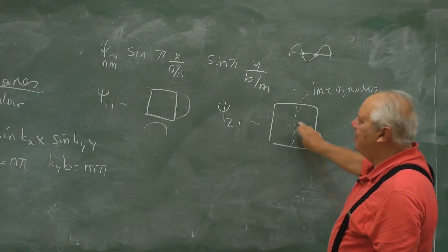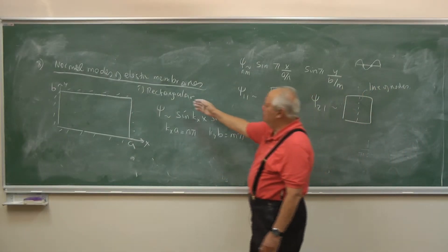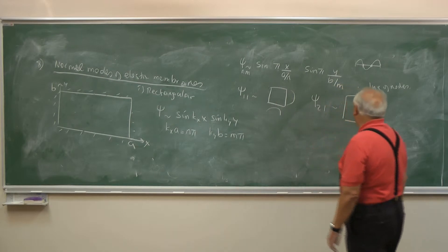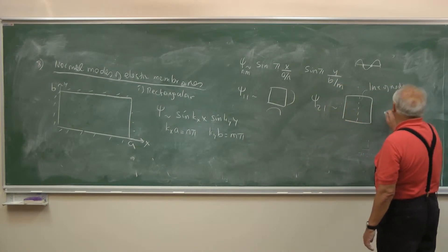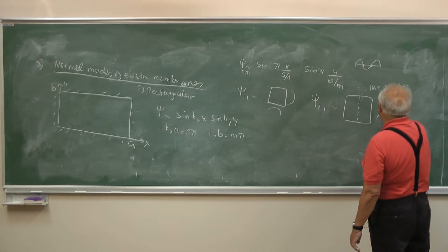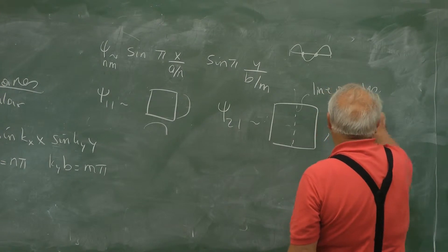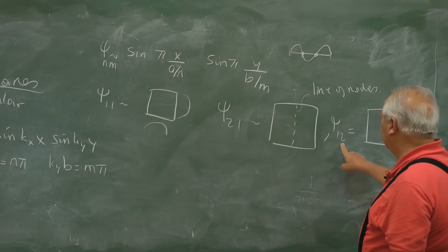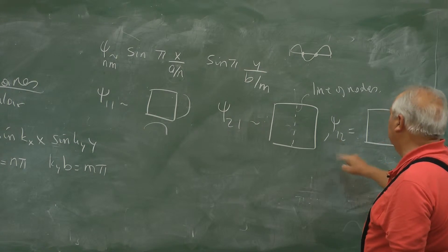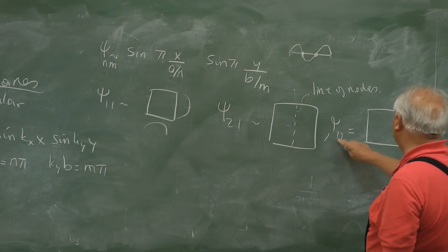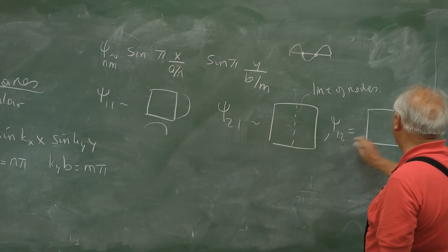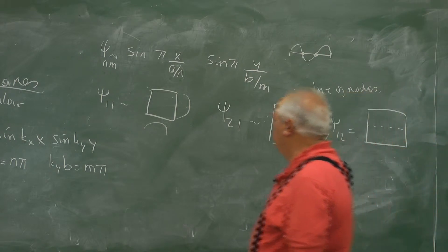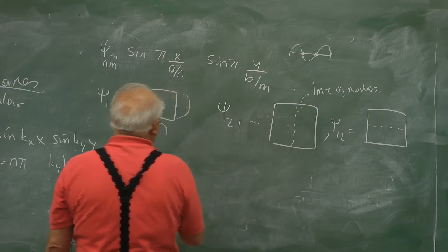For psi(1,2), we divide the Y axis into 2, with no division on X. These are lines of nodes due to the rectangular geometry of this two-dimensional membrane.